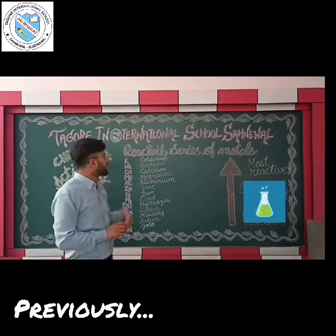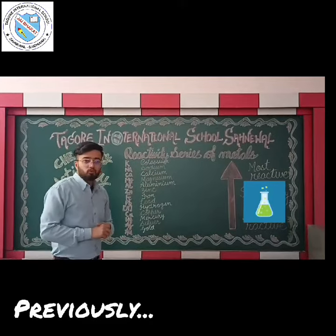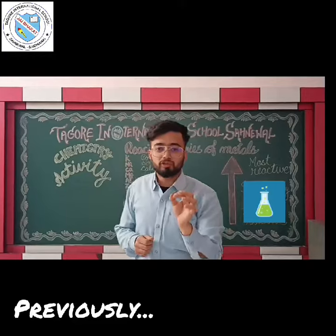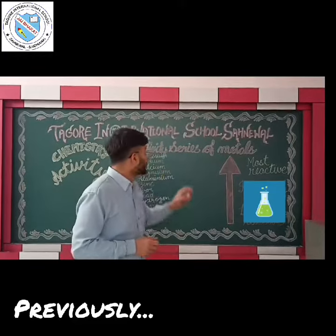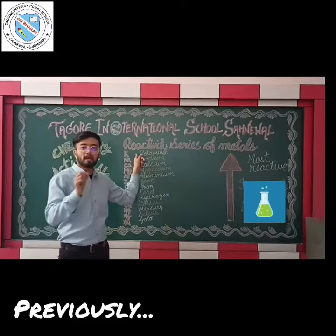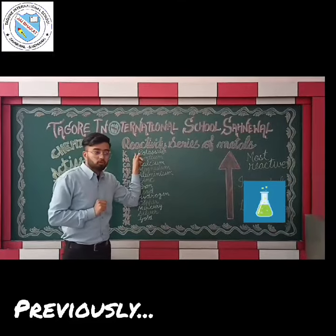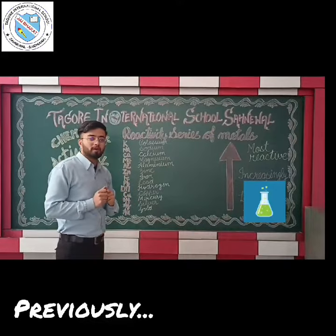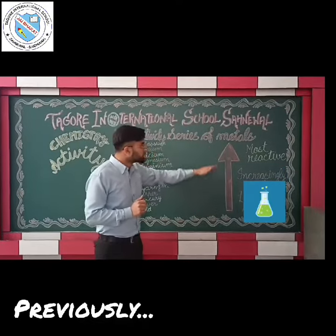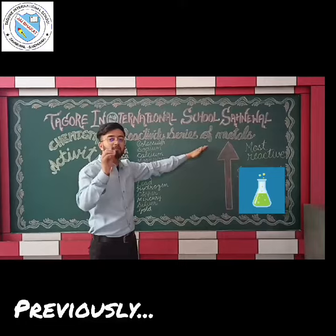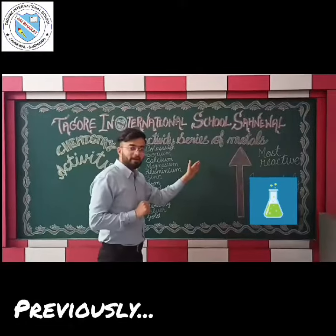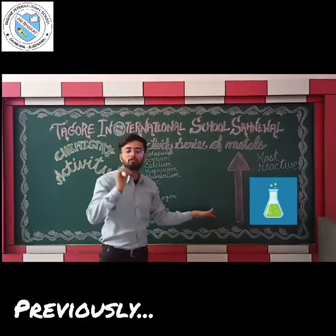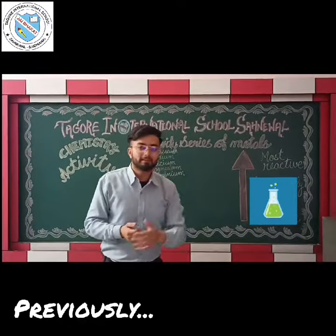Our today's topic is the reactivity series of metals. When we talk about the reactivity series of metals, a common and most important question arises: why are sodium and potassium always kept under kerosene oil? This is based on the reactivity series of metals. You can see that in the reactivity series, when we go from bottom to the topmost side, the reactivity of elements increases, while going downwards from top to bottom, the reactivity of metals decreases.